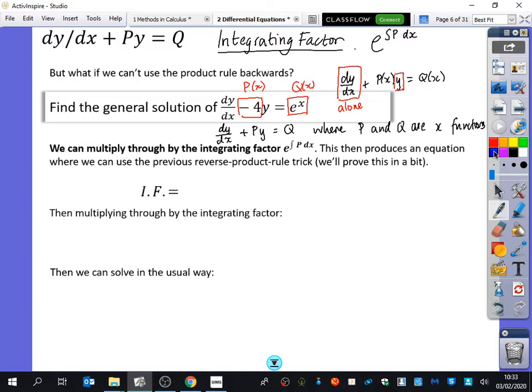So my integrating factor is e to the integral of minus 4 dx, which is e to the minus 4x. We don't need to worry about plus c's or anything here. Now, you may find it helpful to do things like this on your side of the page. So p(x) is equal to minus 4, so the integral of p(x) is minus 4x. You may find it helpful rather than doing it all inside the e function to actually write that separately.